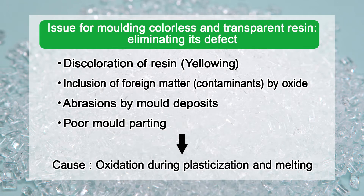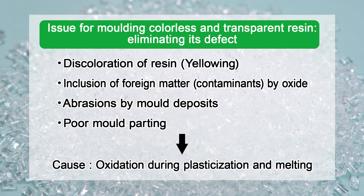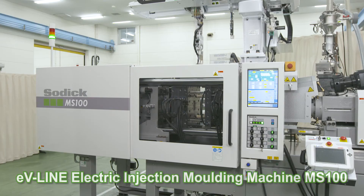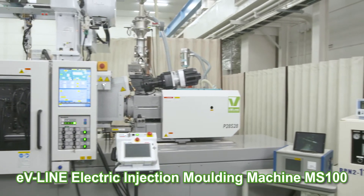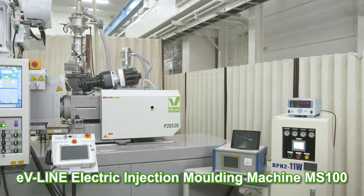Discoloration and contamination are common issues in clear transparent resin molding. Oxidation during plasticization and melting can be mentioned as a cause. When an oxide is deposited in a mold as a mold deposit, it will cause surface damage on products or parts release issues. As a measure to prevent oxidation, there is a method to melt the resin under a nitrogen-enriched state, where nitrogen — an inert gas — is sealed in the plasticization unit.